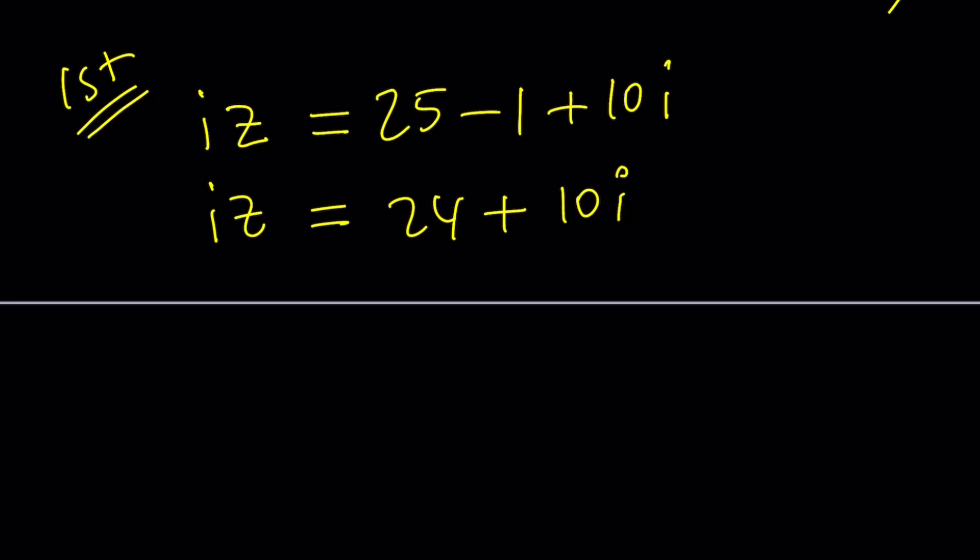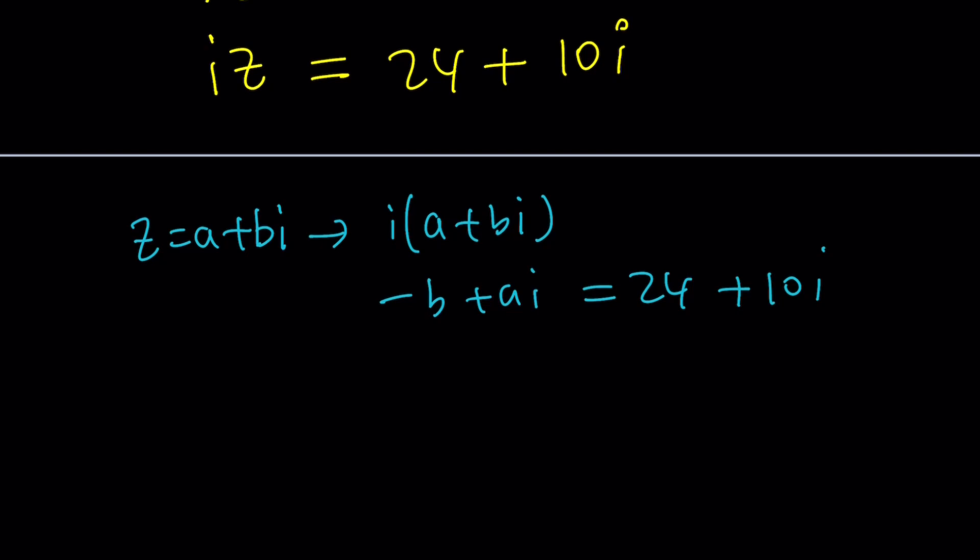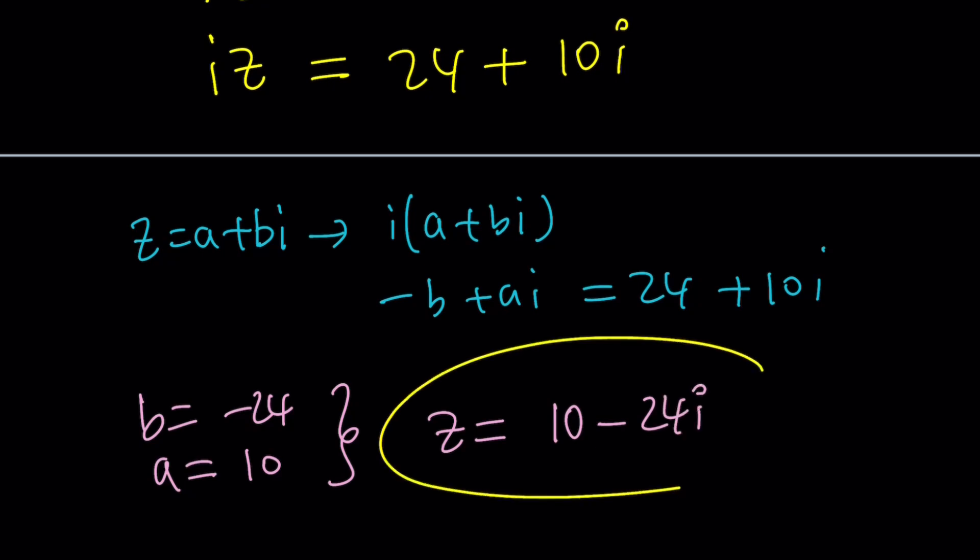Replace z with a plus bi. Come on, that's the name of the channel, right? So now you're going to get a plus bi multiplied by i, which is ai plus bi squared, which is negative b, plus ai equals 24 plus 10i. It's not super bad. It just takes a little longer. And then from here, negative b is 24, which means b is negative 24, and a is 10. And since our number was written as a plus bi, it's going to be 10 minus 24i. So that's going to be the answer that we've been looking for.